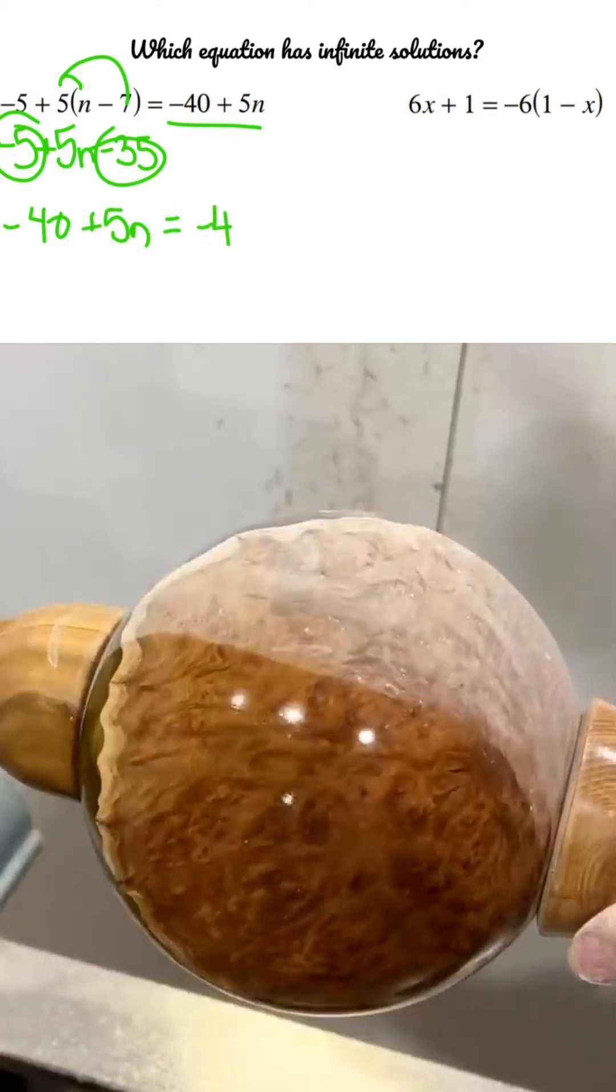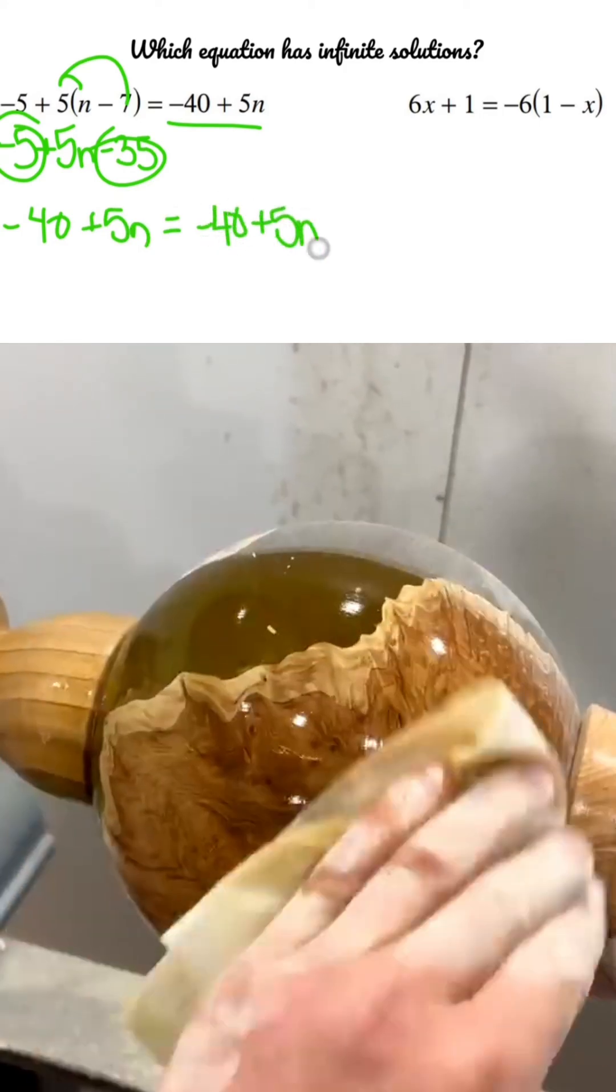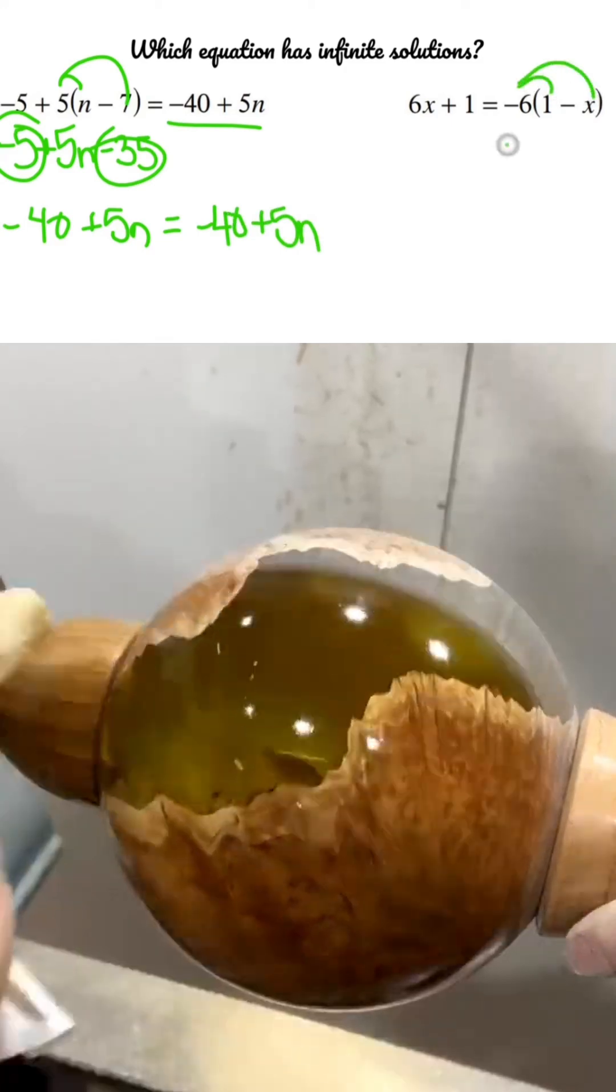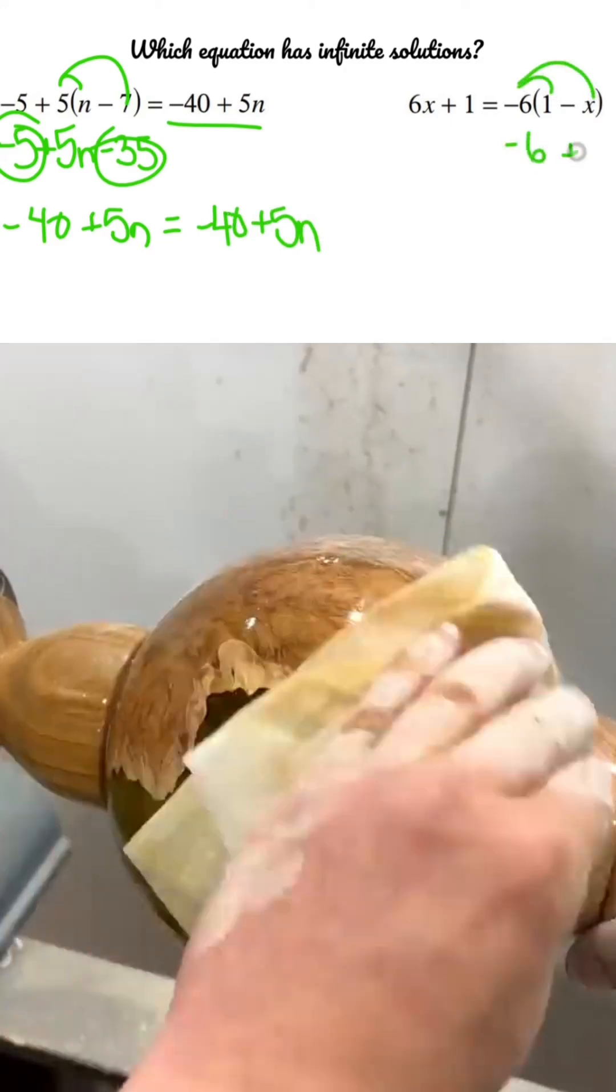Now just for funsies, let's take a look at the right side. Distribute that guy, I would have negative 6, positive 6x.